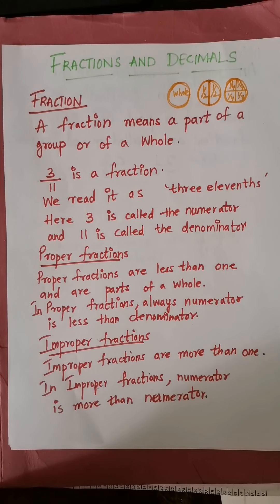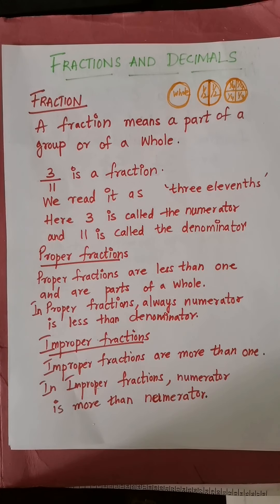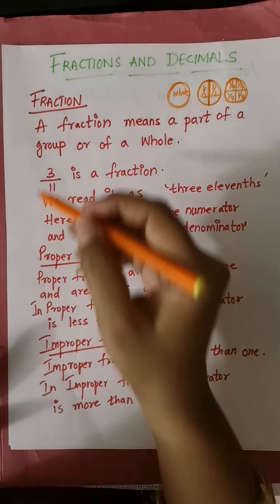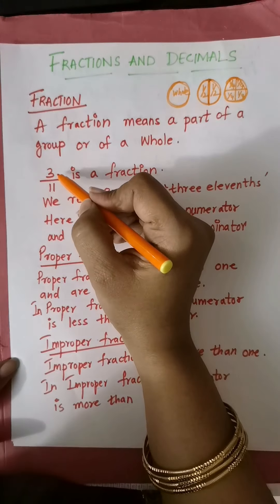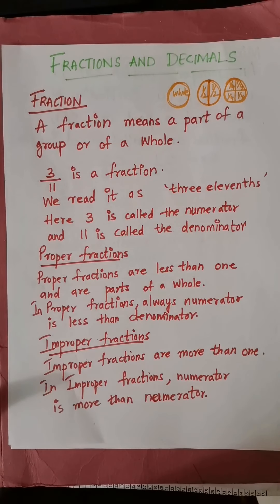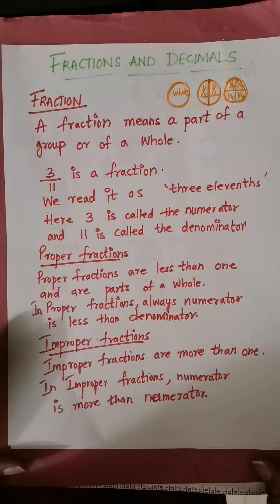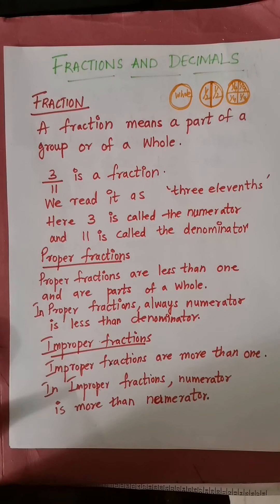3 by 11 is a fraction — that is, three parts we are selecting out of 11 parts. We read it as 3/11 or 3 by 11. Here, 3 is called the numerator — whichever number is on top is called the numerator — and 11 is called the denominator. You already know this.